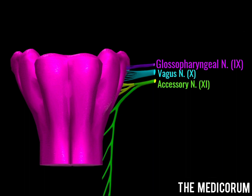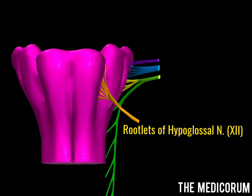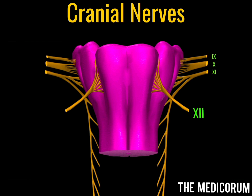In the medulla oblongata, we have a specific structure called the olive. The olives give origin to rootlets of the hypoglossal nerve, which is the 12th cranial nerve. So together we have the 9th, 10th, 11th, and 12th cranial nerves arising from the medulla.